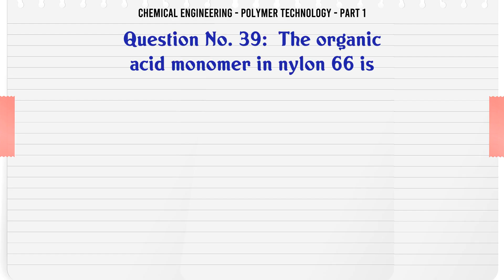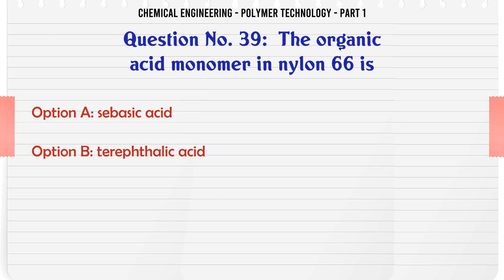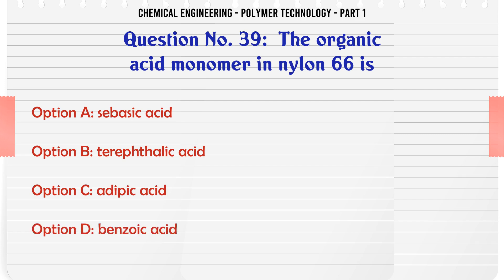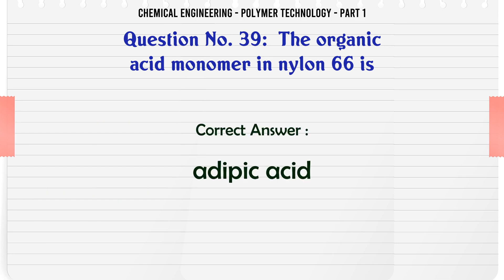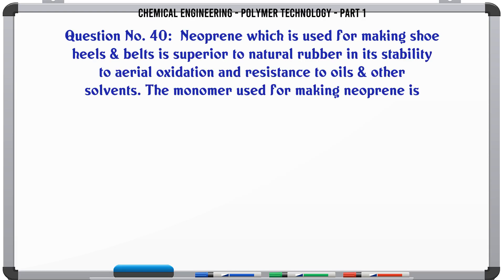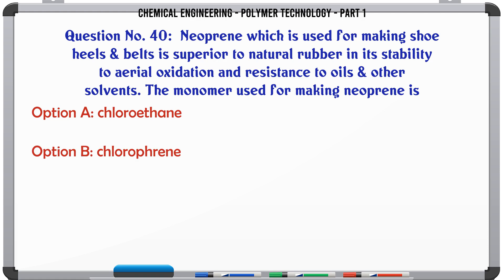The organic acid monomer in Nylon 66 is: A. Sebacic acid, B. Terephthalic acid, C. Adipic acid, D. Benzoic acid. The correct answer is Adipic acid.